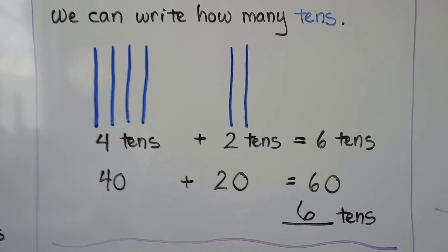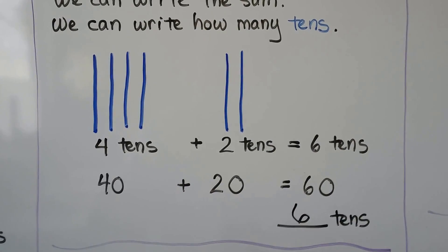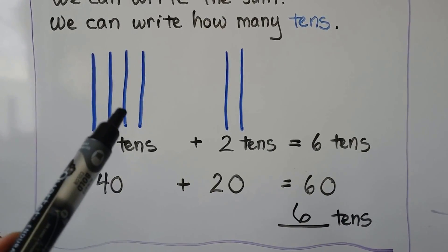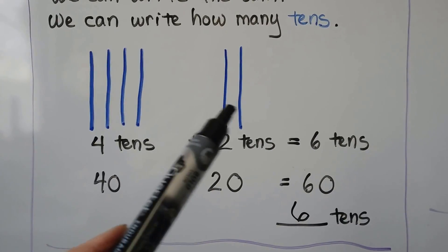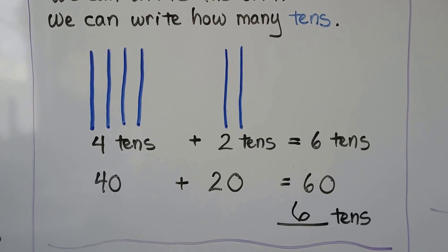We can even count by tens: ten, twenty, thirty, forty, fifty, sixty.